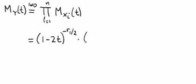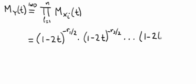And X sub 2 is also a chi-square random variable, but it has r sub 2 degrees of freedom, so its moment generating function is (1 minus 2t) to the negative r sub 2 over 2. And we keep on doing that until we get out to n, which is (1 minus 2t) to the negative r sub n over 2.